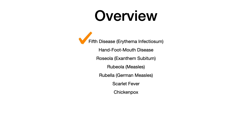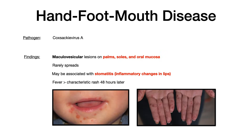Let's move on to hand, foot, mouth disease. As the name implies, this causes lesions on the hand, on the foot, and on the mouth. What you need to know is that this is caused by Coxsackievirus A. The lesions here are maculovesicular, and they appear on the palms, the soles, and the oral mucosa. It rarely spreads beyond those locations, which makes things easier on exams.